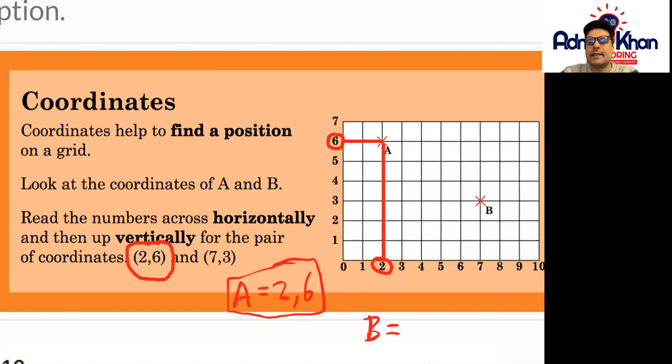B being our second coordinate so remember let's start with the horizontal line first which is left to right.